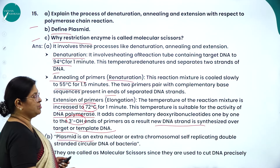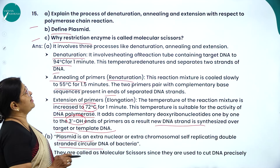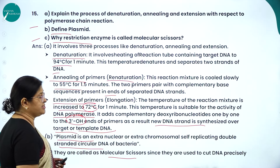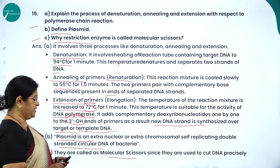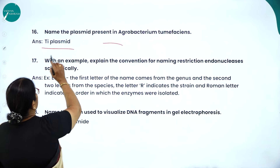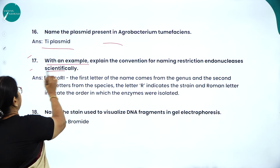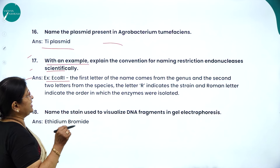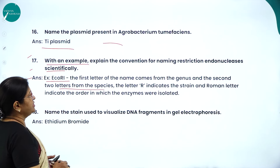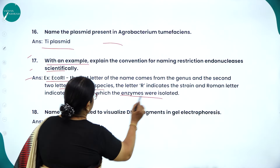Plasmid is an extra-nuclear or extra-chromosomal self-replicating double-stranded circular DNA of bacteria. Restriction endonucleases are called molecular scissors because they cut DNA precisely. The plasmid present in Agrobacterium tumefaciens is Ti plasmid. Convention for naming restriction endonucleases: the first letter comes from the genus, the next two from the species, the letter R indicates the strain, and Roman numerals indicate the order in which enzymes were isolated.